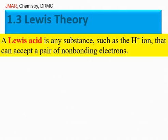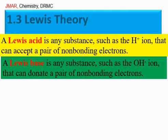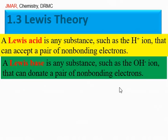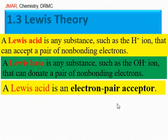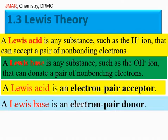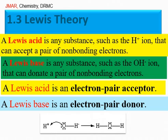Now, Lewis theory. According to this theory, a Lewis acid is any substance — such as the hydrogen ion — that can accept a pair of non-bonding electrons. A Lewis base is any substance — such as the hydroxide ion — that can donate a pair of non-bonding electrons. So, a Lewis acid is an electron pair acceptor and a Lewis base is an electron pair donor. In the equation, the hydrogen ion is an acid and the hydroxide ion is a base.